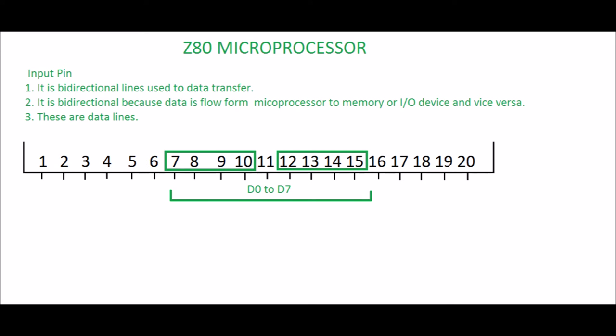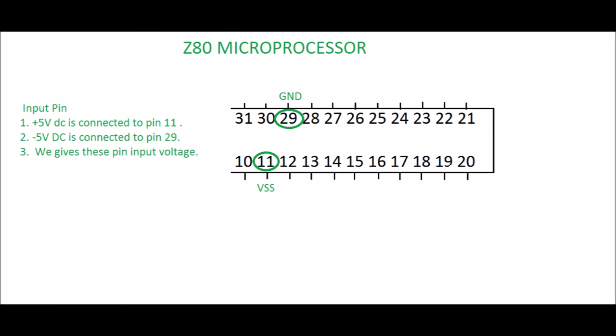Pins 7 to 10 and pins 12 to 15 are bidirectional lines used for data transfer. They are bidirectional because data flows from the microprocessor to memory or I/O device and vice versa. Pin 11 (VSS) and pin 29 (GND/VCC): plus 5 volts DC is connected to pin 11 and minus 5 volts DC is connected to pin 29. These are input pins as we supply input voltage to them.